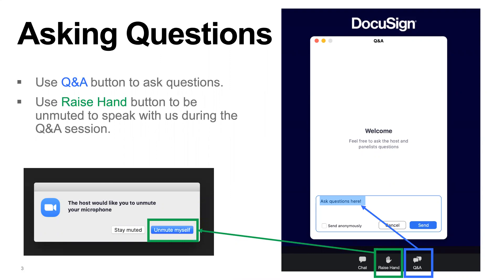You have two different techniques for asking questions today. The first is that you can use the Q&A button to type in a question, and you're welcome to do that — I encourage you to do so at any time during the presentation, as soon as the question occurs to you. You type in your question, and then near the end of the webinar, we'll discuss all the different questions that have been entered.